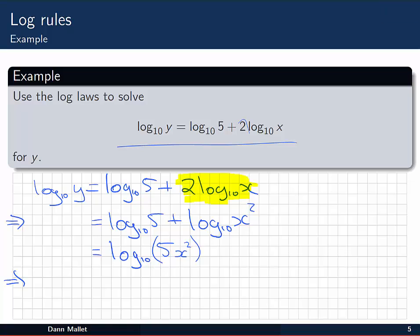Now I can either simply read off that y is equal to 5x squared. Or if you like, apply the inverse function, which is 10 raised to the power. So 10 raised to the power of log base 10 of y will be simply y. And on the right hand side, 10 to the log base 10 of 5x squared is 5x squared. So there we have our solution for the variable y.